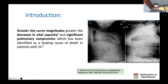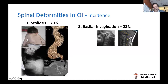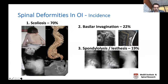The incidence of scoliosis in OI is high—almost 70 to 80 percent of patients develop some form of it. But it's critical to also think about what happens at the upper end of the spine: about a quarter of patients develop basilar invagination, which has dire consequences as it causes compression of the brainstem. At the lower end, about a fifth develop spondylolysis and spondylolisthesis. So when assessing OI patients for scoliosis, always also look for basilar invagination and spondylolysis.